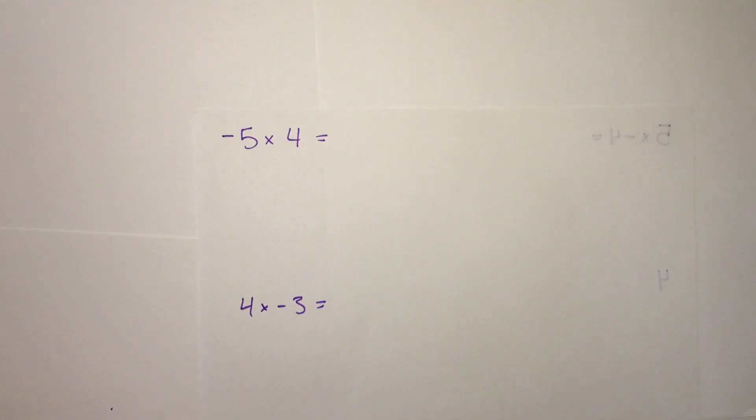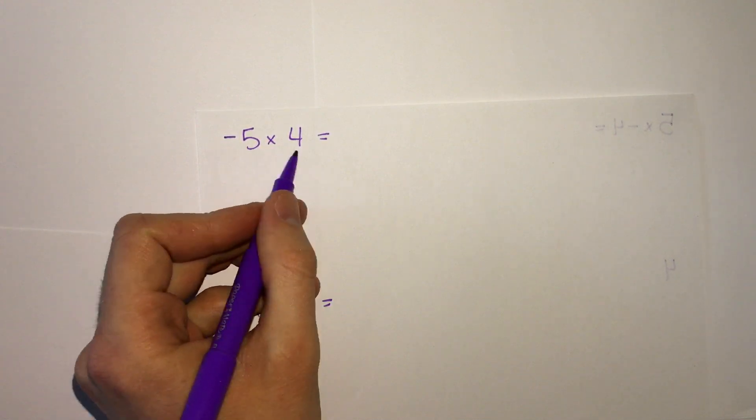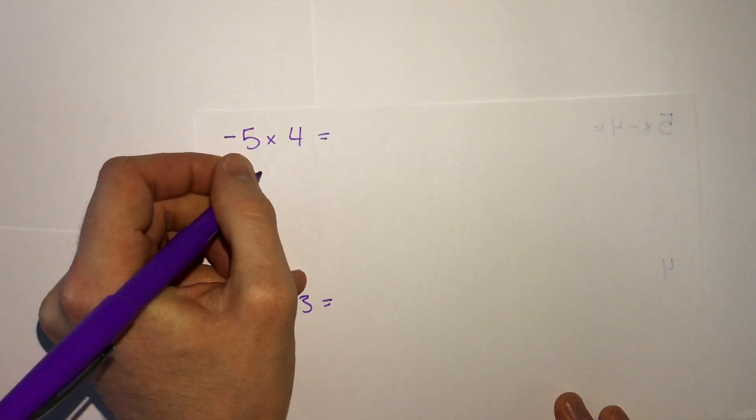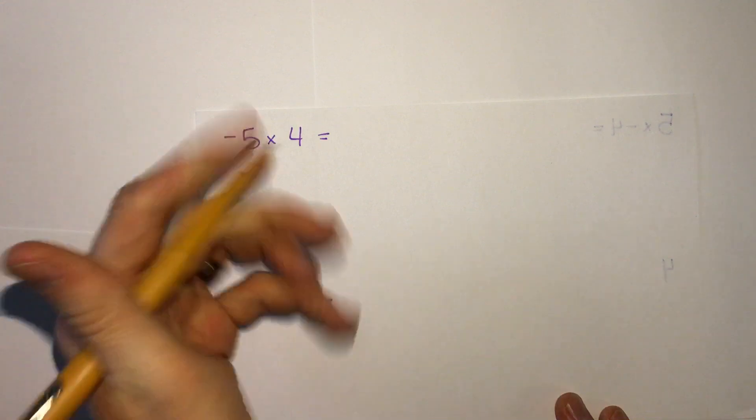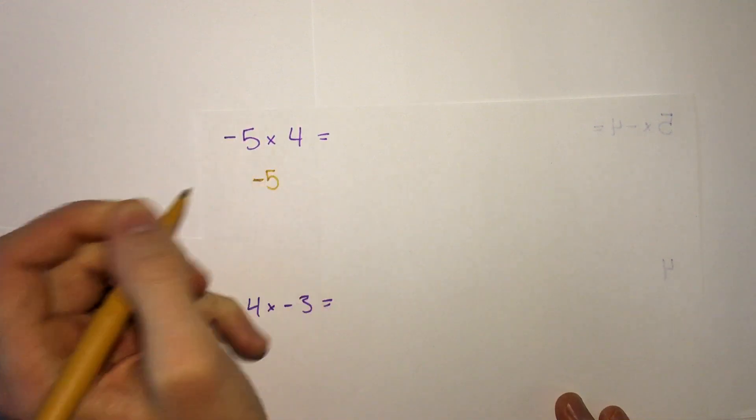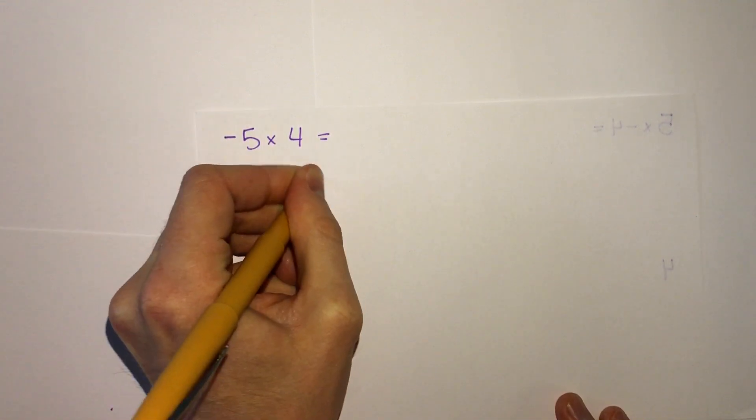Let's take a look at our first example, negative 5 times 4. Remember that multiplying is just addition that's repeated over and over. So negative 5 times 4 literally means we're taking the number negative 5 and adding it 4 times.